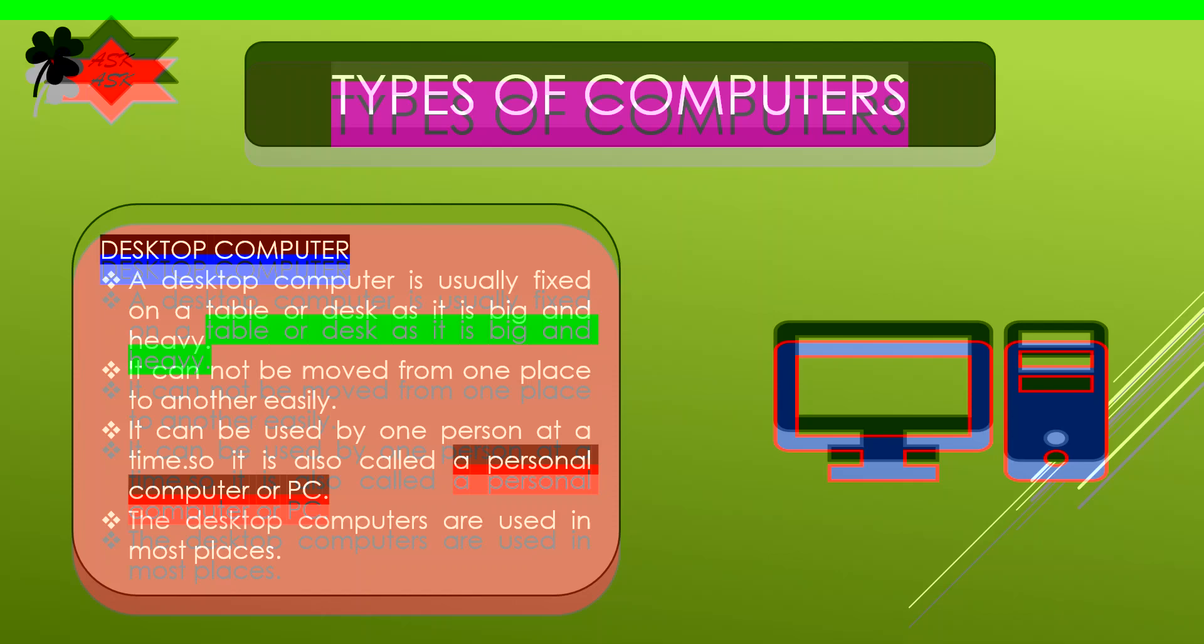A desktop computer includes the monitor and the CPU (Central Processing Unit). A desktop computer is usually fixed on a table or desk as it is big and heavy. It cannot be moved from one place to another easily. It can be used by one person at a time, so it is also called a personal computer or PC.